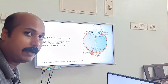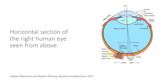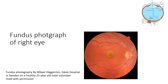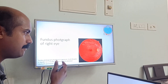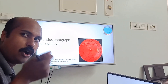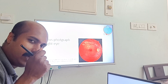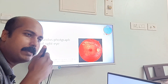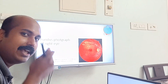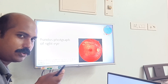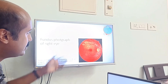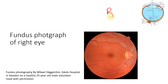This same thing can be seen on a fundus picture. A fundus picture can be obtained by fundus photography or by examining with an ophthalmoscope. You may see neurologists or ophthalmologists examining with an ophthalmoscope - this is the fundoscopic image of the right eye.